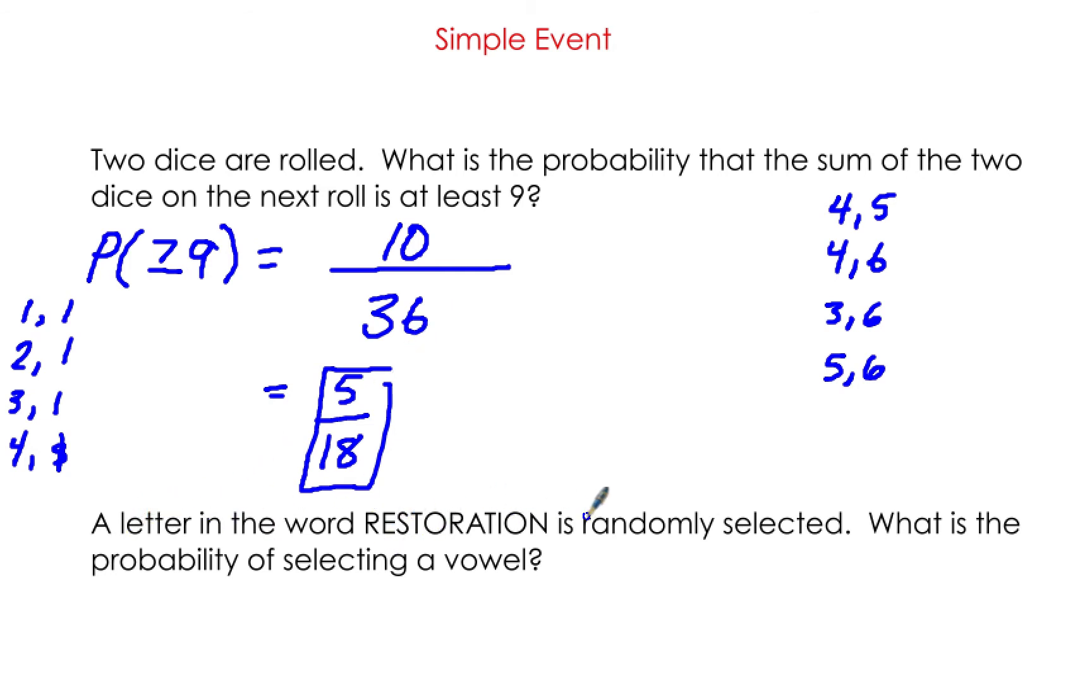A letter in the word RESTORATION is randomly selected. What is the probability of selecting a vowel? There are 5 vowels, and RESTORATION has 11 letters total. So the probability of drawing a vowel is 5/11.